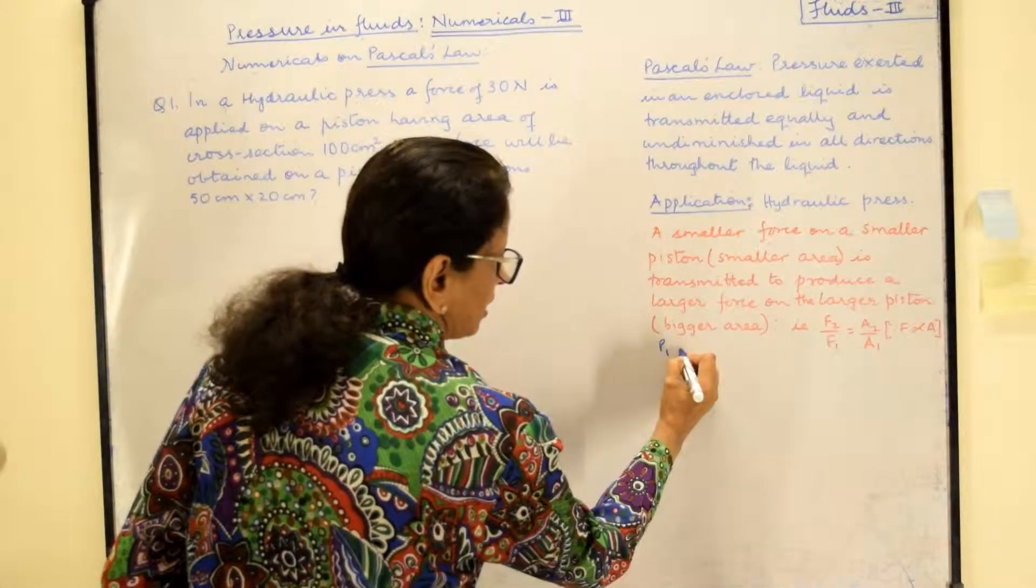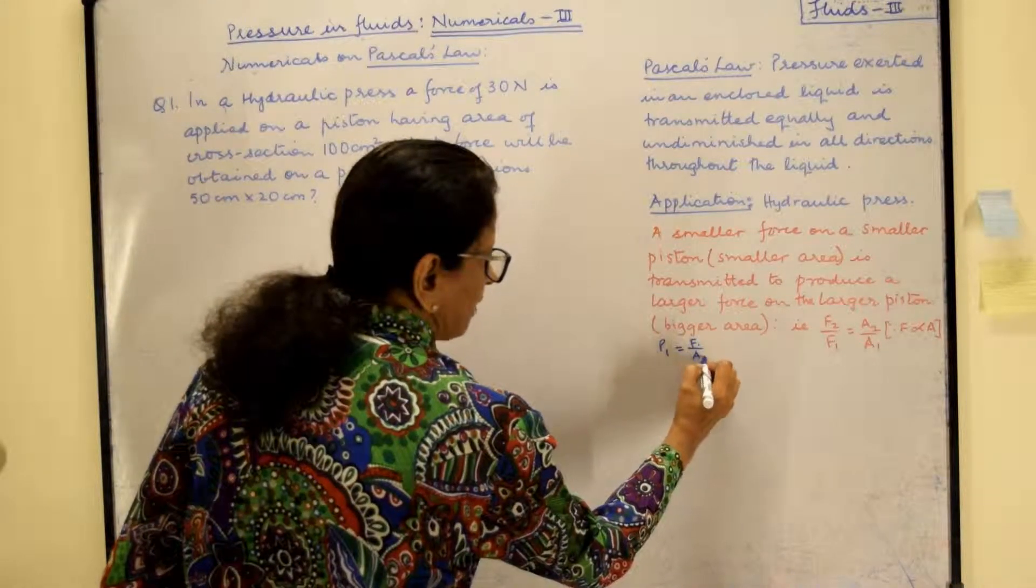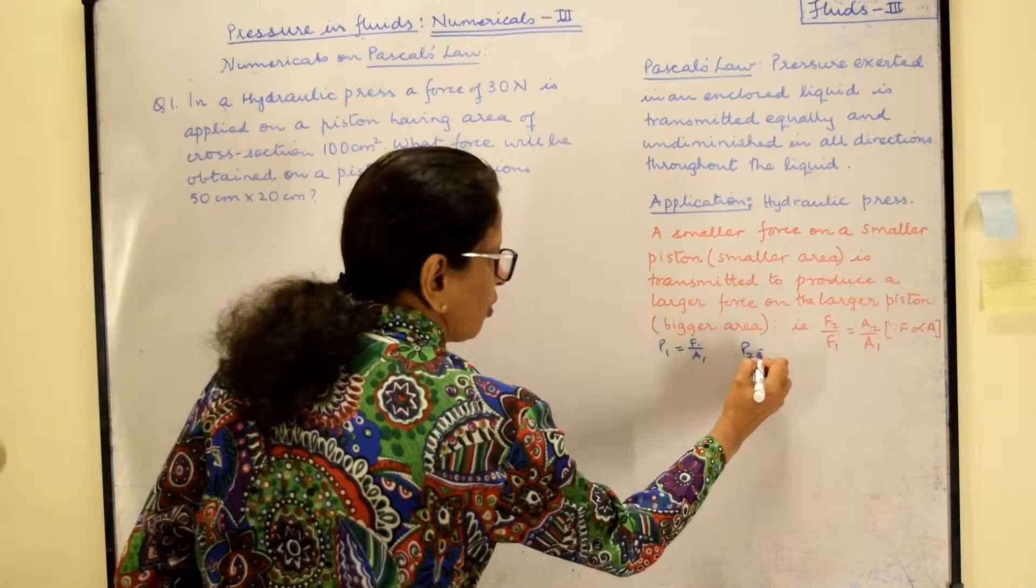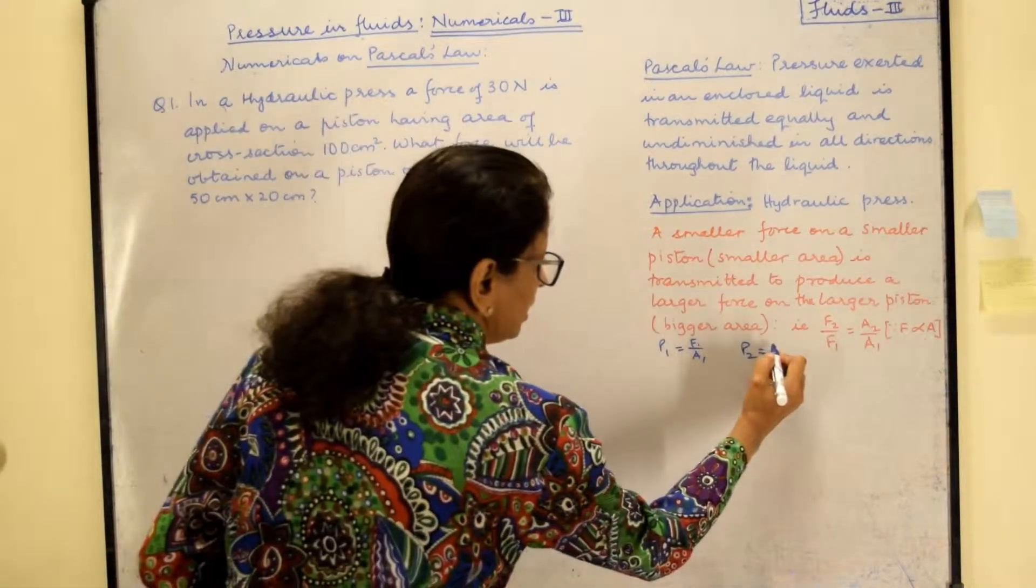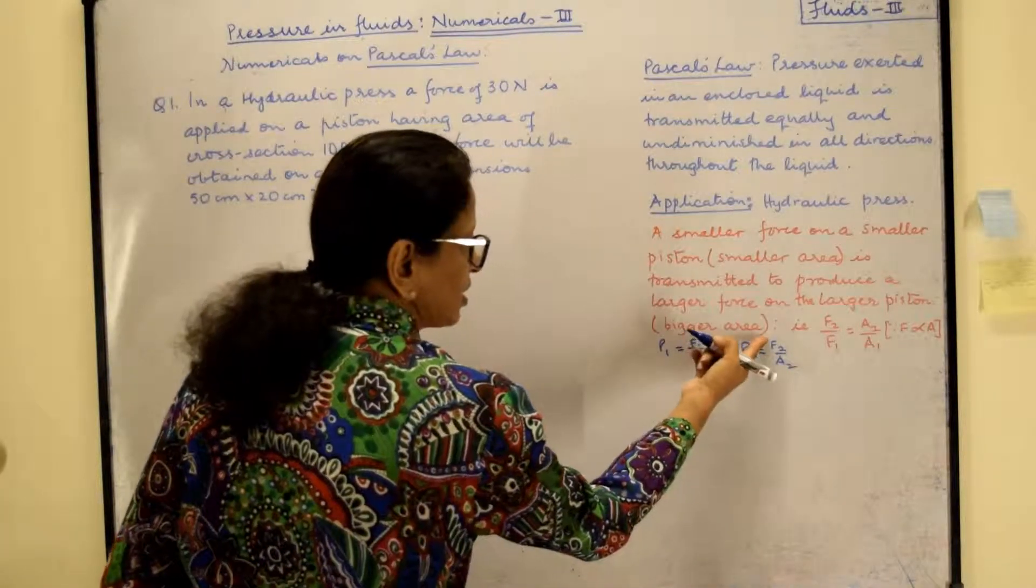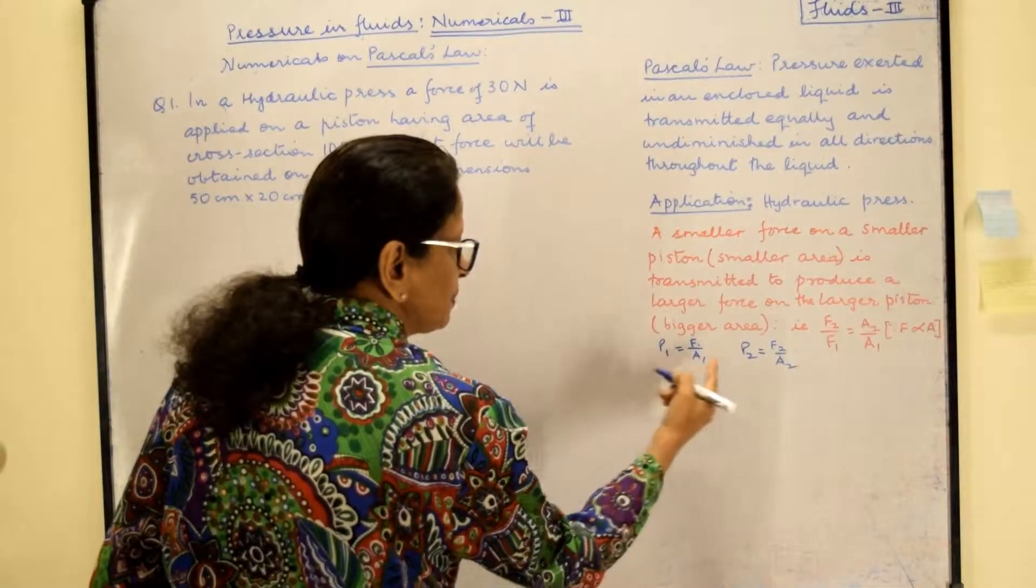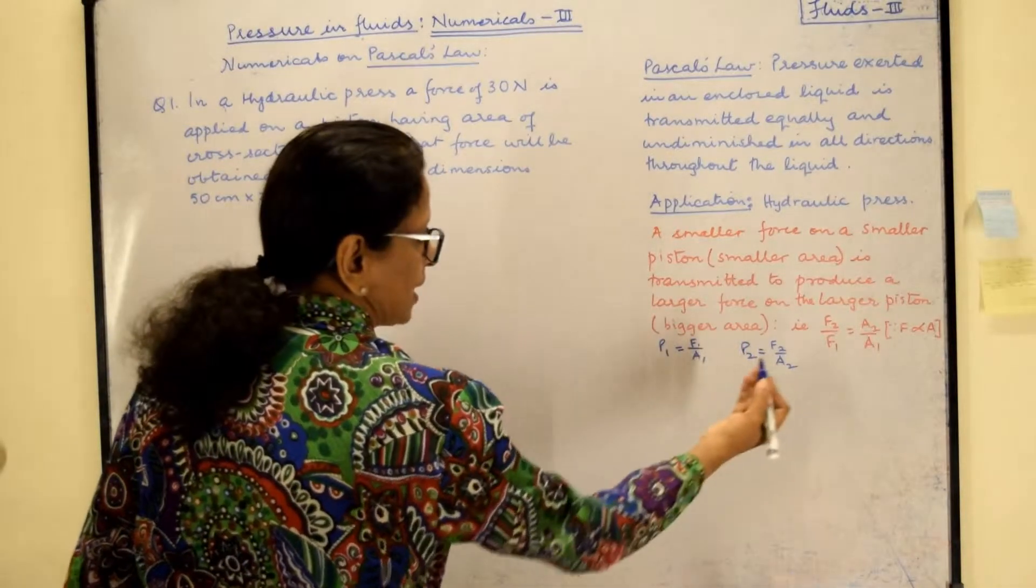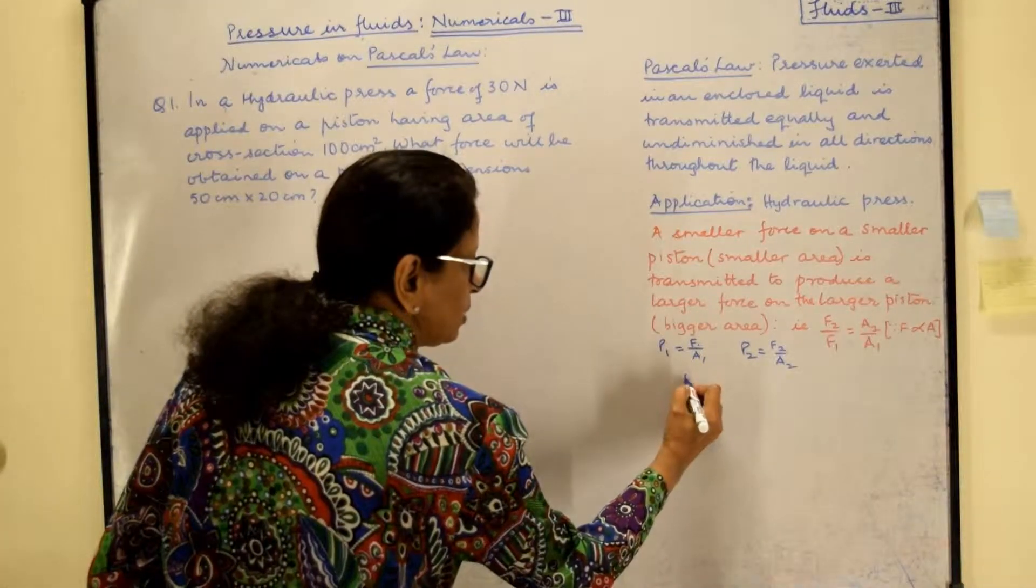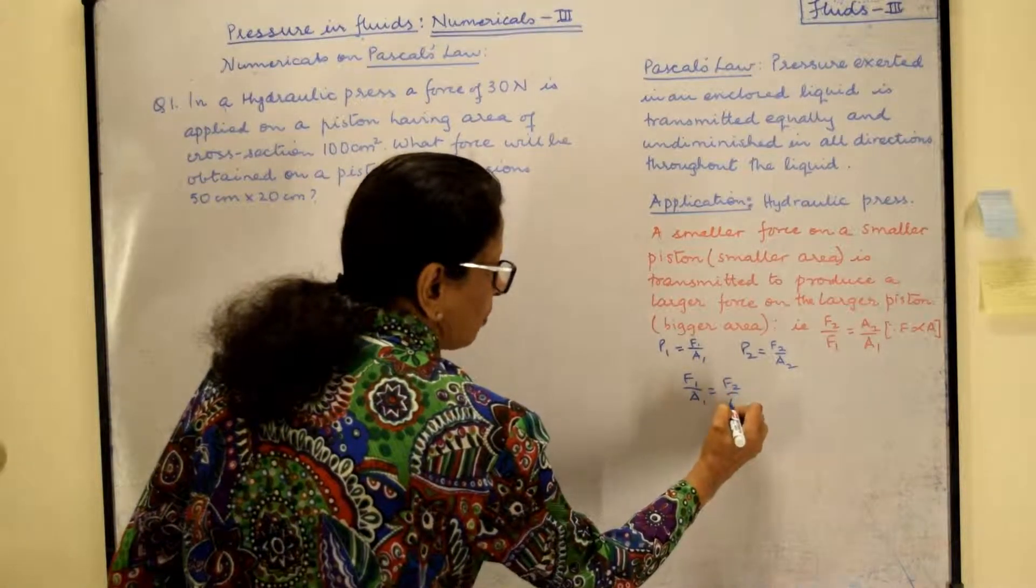So if we talk about P1, P1 is going to be equal to F1 upon A1 for the smaller piston and P2 which will be for the larger piston, it will be again F2 upon A2, the force that will be transmitted to the larger piston upon larger area. And since P1 is equal to P2 because pressure is transmitted equally and undiminished, P1 is equal to P2 and so F1 upon A1 is equal to F2 upon A2.